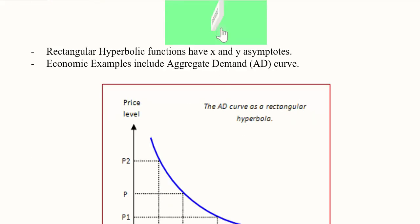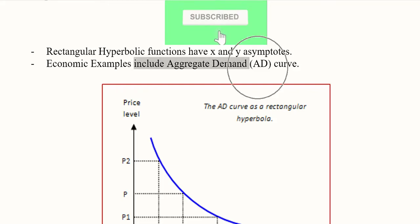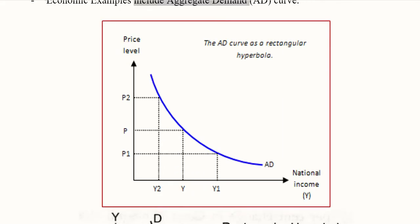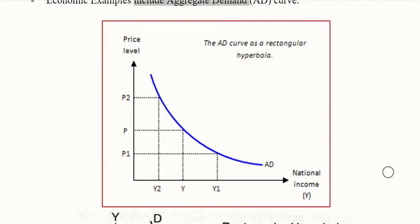Now let's focus on economic examples. The first example is the aggregate demand curve. The graph plots the general price level against national income, and the aggregate demand curve takes the form of a rectangular hyperbola — forming an asymptote approaching the x-axis where national income is placed, and an asymptote to the y-axis where the general price level is plotted.